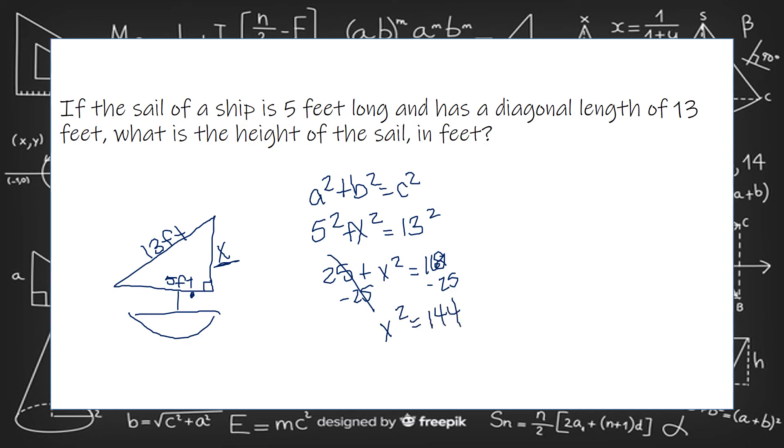So 169 minus 25, and we get 144. To get rid of the square that is attached to the x, we're going to take the square root of x squared, you get x. When you take the square root of 144, you get 12. So the height of this sail in feet is 12 feet.